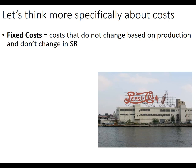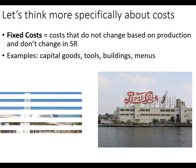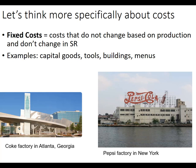The first type of cost is fixed costs. Fixed costs do not change based on how much you produce, and they don't change at all in what's called the short run. For example, Pepsi could make a billion units from their factory or just 10 units — the cost of that building, keeping it up, all of that, is going to be exactly the same. Examples include any capital goods, tools, buildings, menus in a restaurant — whether the restaurant is open 24/7 or only for breakfast, those costs don't change. Both the Pepsi factory in New York and the Coke factory in Atlanta are examples of fixed costs.